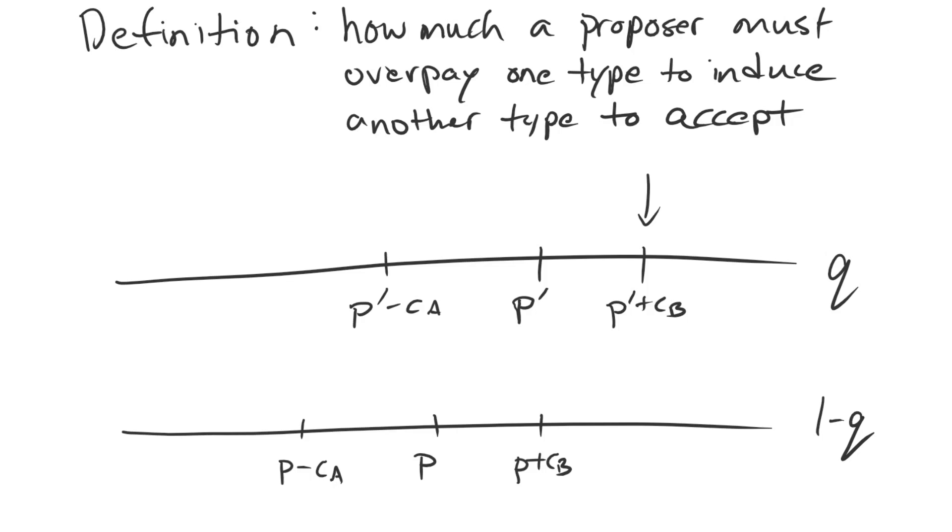In contrast, if A is relatively likely living in the second case where A does not have as much power, its equilibrium demand is P plus CB, which is just enough to get B to accept under that circumstance. If B is privately informed that it is weak, then it would also accept. So in the second case, we have peace happening with certainty. It's only in the first case, where A is making the risky demand, that we get war to occur.